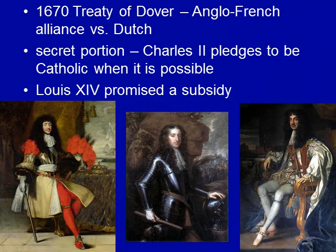In 1670, we have the Treaty of Dover — an Anglo-French alliance versus the Dutch. There is a secret portion: Charles II pledges that he will become Catholic when it is politically possible to do so in England, and Louis XIV promises him a subsidy. An illustration shows Louis XIV on the left, William of Orange in the middle — who will later become William III of England — trying to protect the Dutch Netherlands, and Charles II on the right.